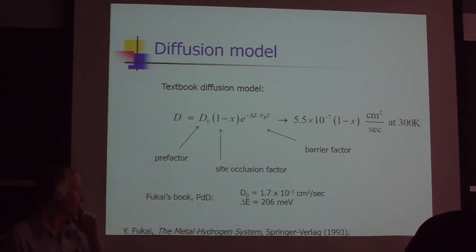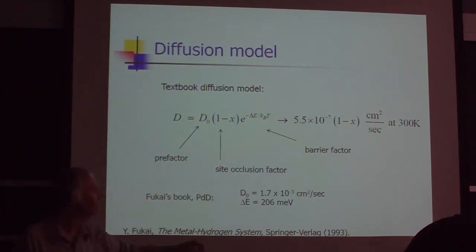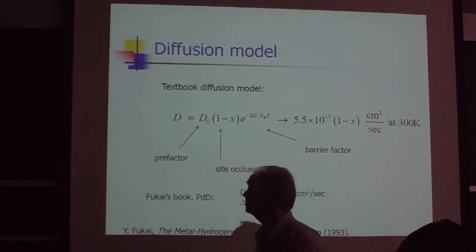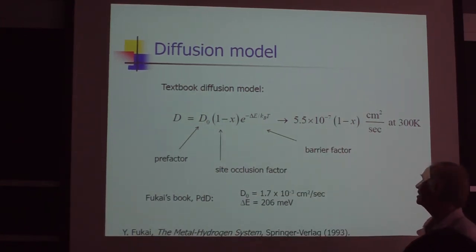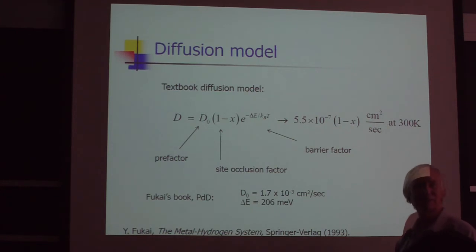At room temperature, the numbers look like this. The diffusion constant's here. The diffusivity is 5.5 times 10^-7. You might look at that. That's a nice number. It looks pretty small. What does it mean? Deuterium or hydrogen goes through the palladium sort of very quickly. Namely, palladium has a very high diffusivity coefficient for hydrogen and deuterium.